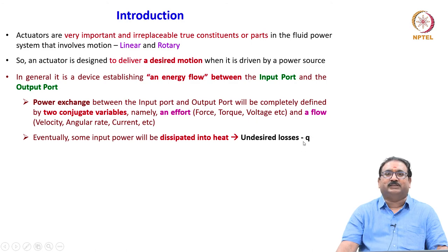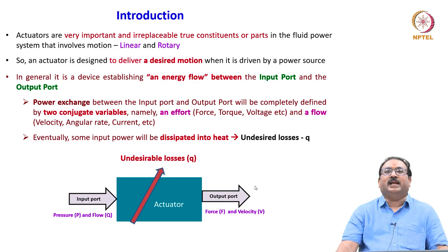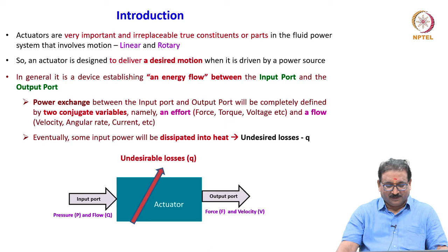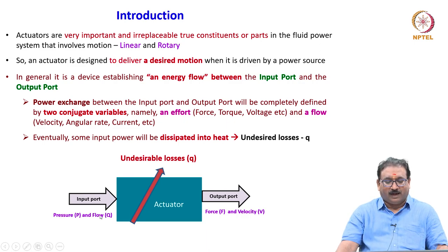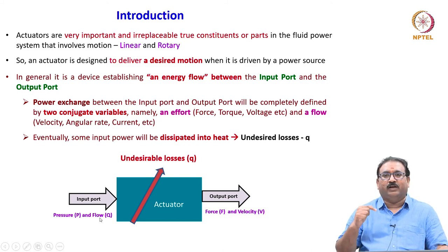To represent this, a simple sketch shows that an actuator converts one form of energy into another — generally mechanical energy. The input energy may be electrical energy, fluid energy, or heat energy, but the output energy is always mechanical energy to do useful work. The input port carries pressure p and flow; pressure p decides the force, and flow decides the velocity in case of linear actuators. In case of a rotary actuator, pressure decides the torque and flow decides the angular rotation.